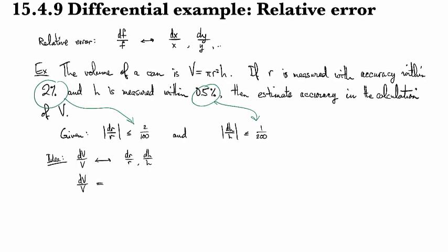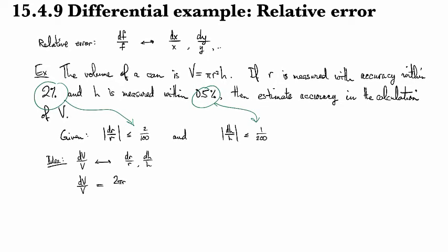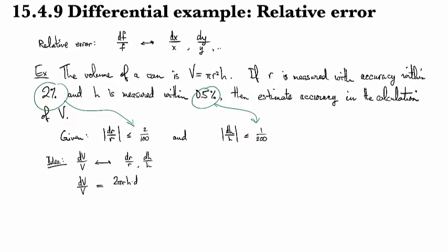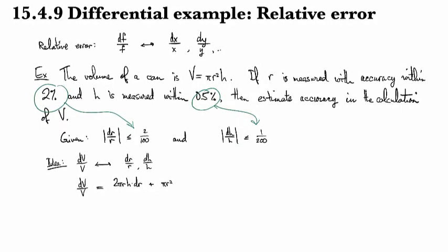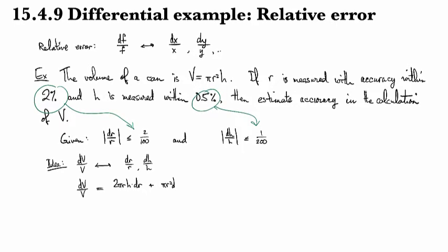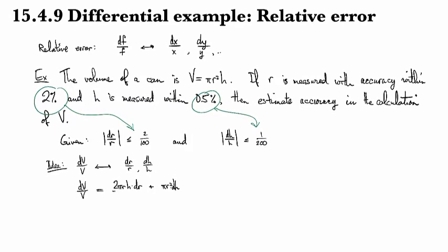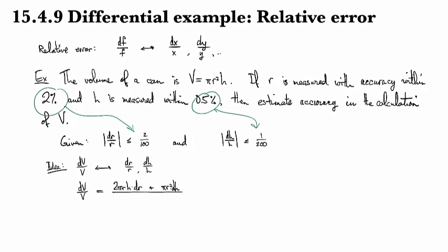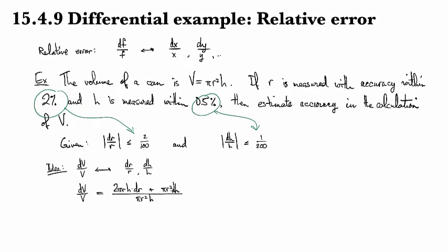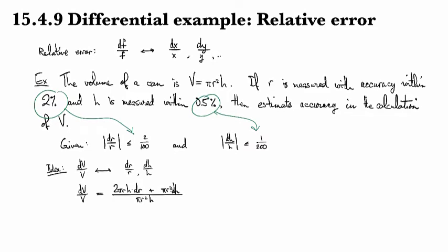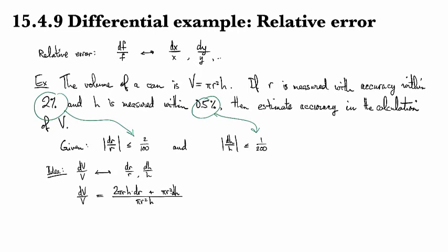For dV we're going to have the partial of V with respect to R times dR plus the partial with respect to H times dH. And then V on the bottom is pi R squared H. Now I want to separate this apart into something having to do with dR over R and something having to do with dH over H.